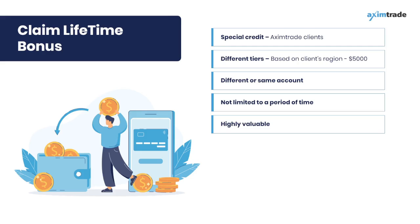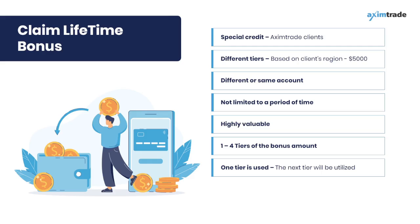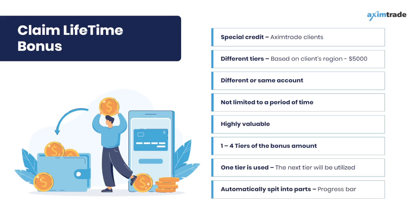The lifetime deposit bonus is categorized by 1 to 4 tiers of bonus amount. When the bonus amount from one tier is used, the next available tier will be utilized. If the calculated bonus amount is more than the size of the first and subsequent tiers, the deposit amount will be automatically split into parts to utilize each tier in full, one by one. Bonus percentage will be applied according to each particular tier, and clients can check the progress bar located in their member area.